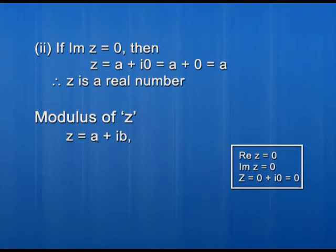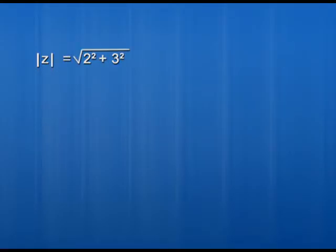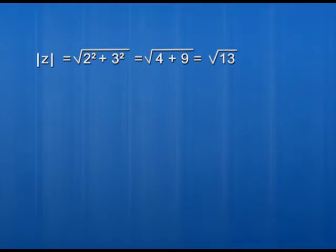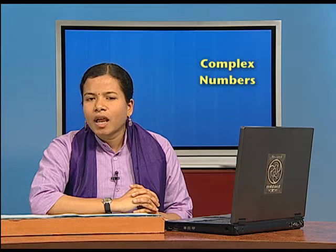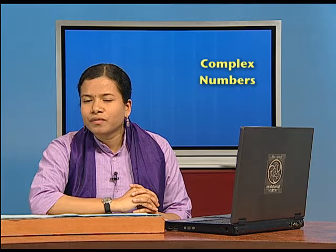Now let us see how to calculate the modulus of a complex number. Suppose z equals a plus ib. The modulus of z, denoted |z|, is the non-negative square root of a squared plus b squared. For example, if z equals 2 plus i3, then |z| equals the square root of 2 squared plus 3 squared, which equals the square root of 4 plus 9, giving the square root of 13.